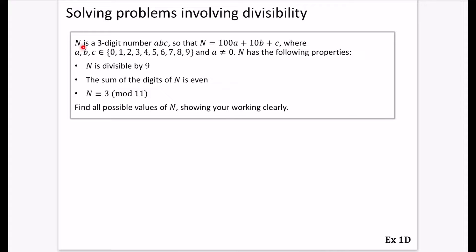So it says here that N is a three digit number ABC, that N can be written in this form, where A, B and C are basically digits that we would use. We've got those 10 numbers there. And A cannot be equal to zero because it's no longer a three digit number. And it's got these three different properties. First of all, the number is divisible by nine, the sum of the digits is even, and N is congruent to 3 mod 11. We're going to find all the possible values of N showing our working clearly.